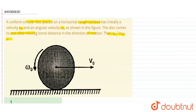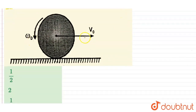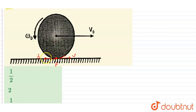This is the disc as given. It has angular velocity ω₀ and translational velocity v₀, so it performs both translational and rotational motion. Since the surface has friction, we consider the point P touching the surface. Friction acts in the opposite direction to the tendency of motion — so friction acts in this direction, opposing the translational velocity.